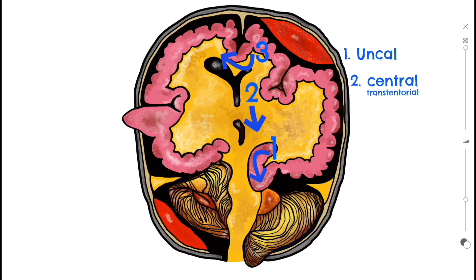Arrow three indicates a sub-falcine herniation. This is the most common type of brain herniation, and it occurs when the innermost part of the frontal lobe is pushed under part of the falx cerebri. This doesn't put as much pressure on the brain stem as other herniations, but it may interfere with blood flow in the anterior cerebral artery.